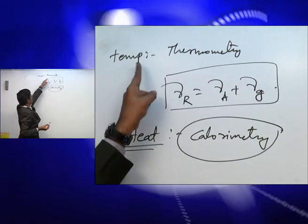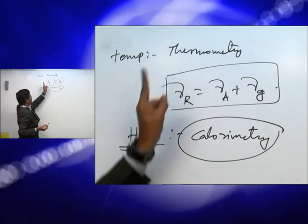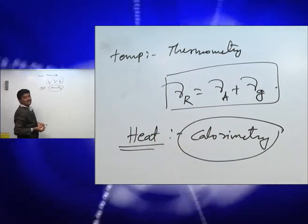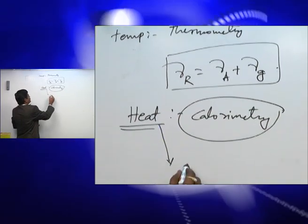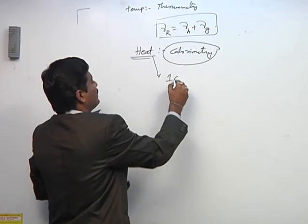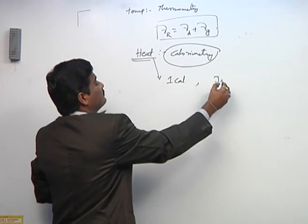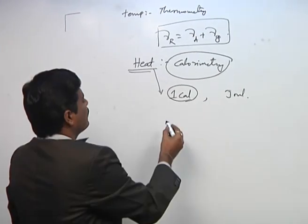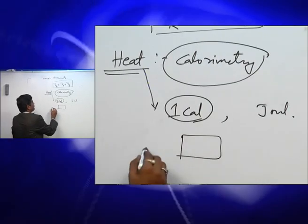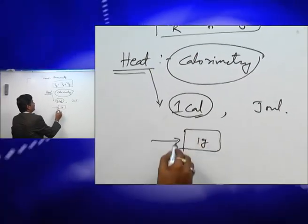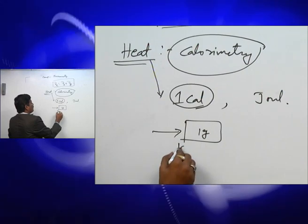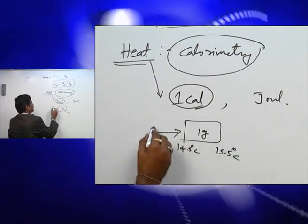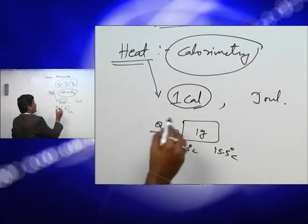In the previous section, we saw how to measure temperature. Now we are going to measure heat using calorimetry. The units of heat we are taking are calories and joules. A calorie is the amount of heat supplied to 1 gram of water from 14.5 degrees centigrade to 15.5 degrees centigrade.